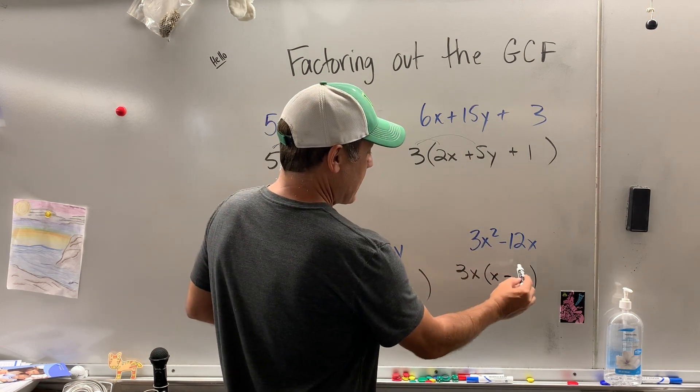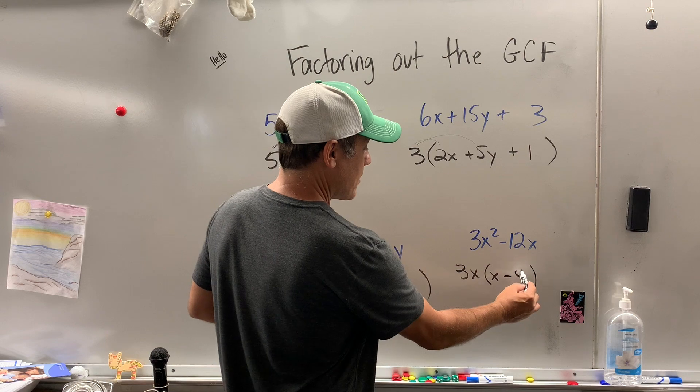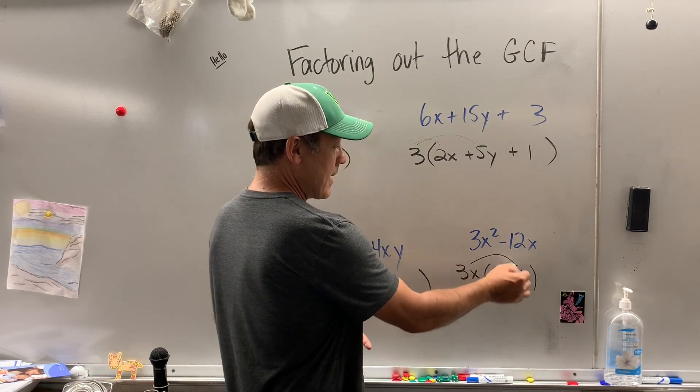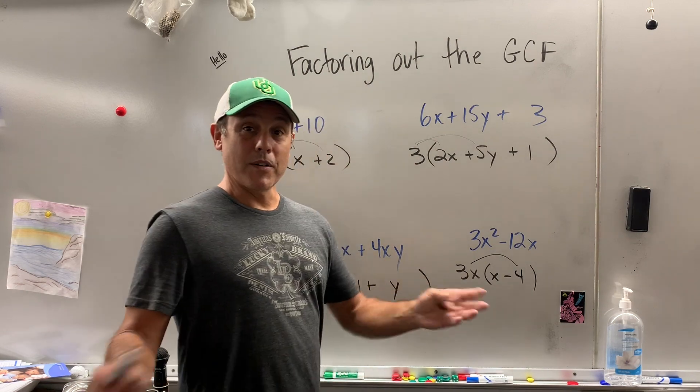And then minus, because 3 times what is negative 12? Minus 4. 3x times 4 is negative 12x. We did it. We're done.